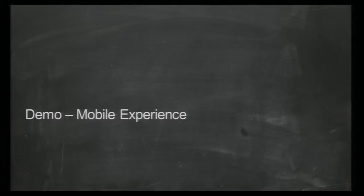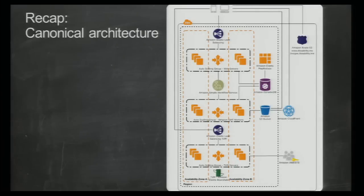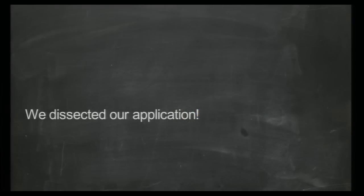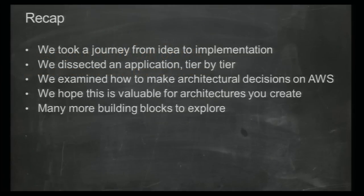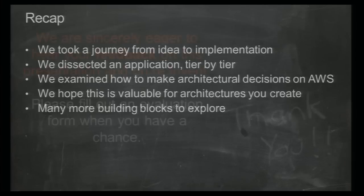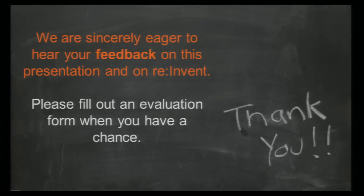We dissected the application and took you through all the architectural decisions at the different tiers. We took a journey from an idea to implementation, dissecting each tier, explaining decisions, and showing how you can use AWS building blocks. Hopefully this has given you an introduction to some of them and stimulated you to go and explore them further. Please give us some feedback — this was an experimental session and we'd love to know how to improve it. We'll be around here if you have questions, and we'll also be at the bar. Hope you enjoyed the conference — thanks very much and have a great rest of your trip.